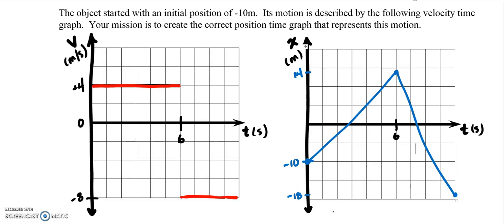The first thing I always do with a velocity time graph, if I need to make a position time graph, is you need to know where to start. Right here, this is your initial position. So I went first there, I put a dot down here—that's where I start.